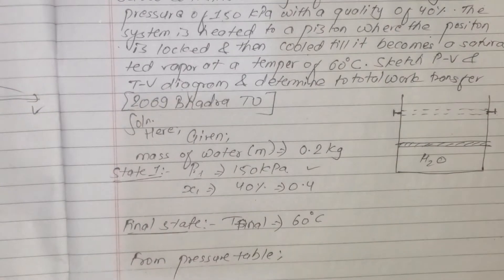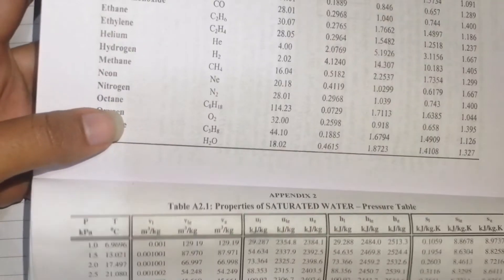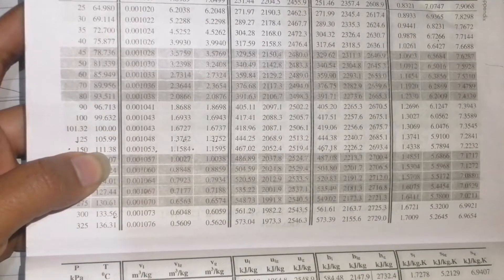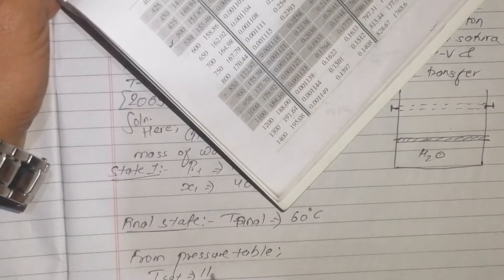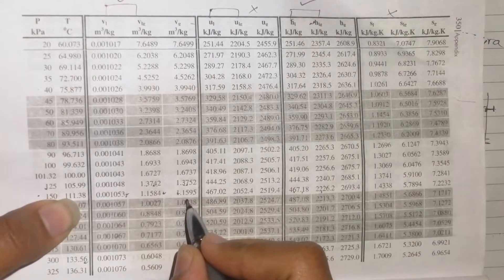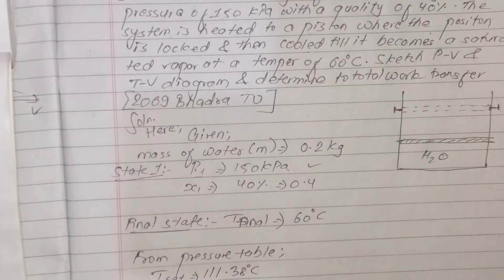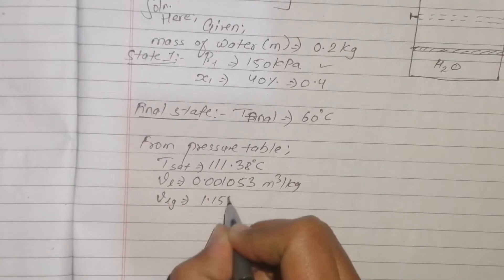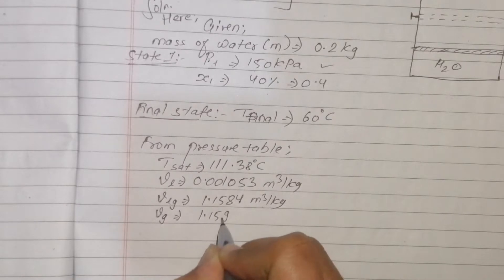Pressure is 150 kilopascal. From the pressure table, T_sat is equal to 113 degrees Celsius.